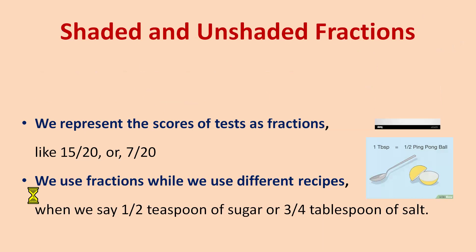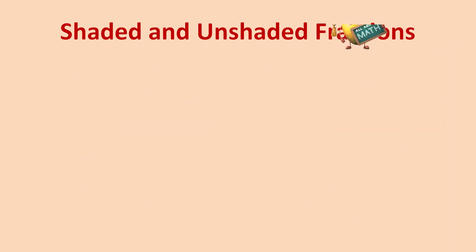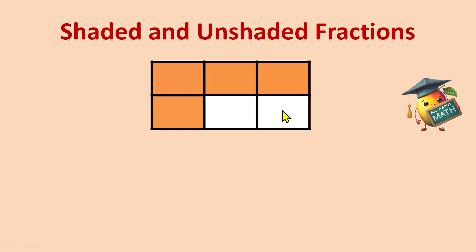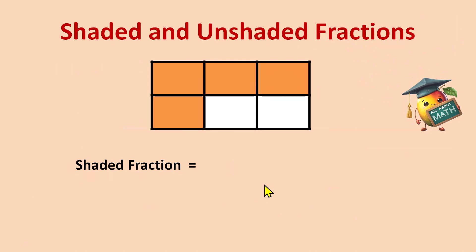Now we will learn shaded and unshaded fractions. We have a figure here and we need to find the shaded fraction. The numerator will be the shaded part. The shaded parts are 1, 2, 3, 4 — so 4 parts are shaded. The denominator is always the total. The total number of parts are 6. So the shaded fraction is 4 divided by 6.